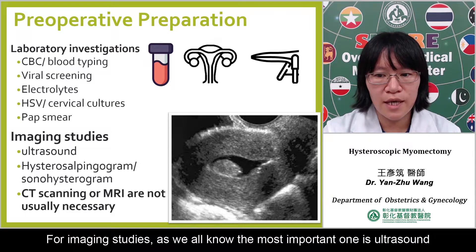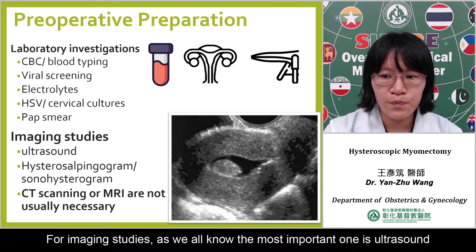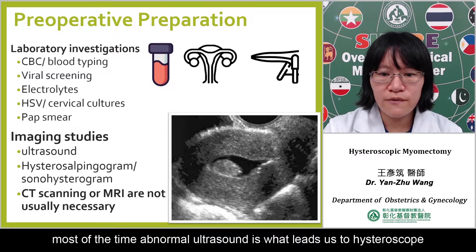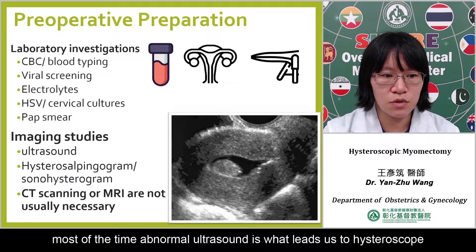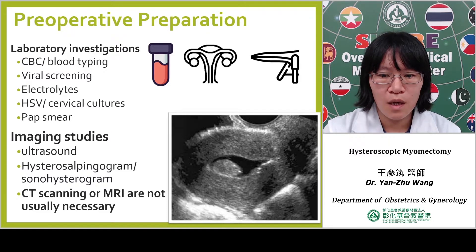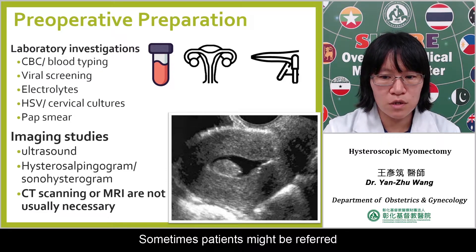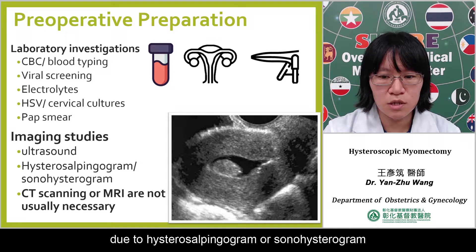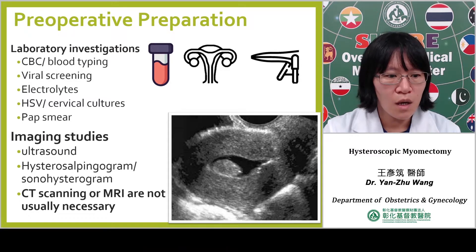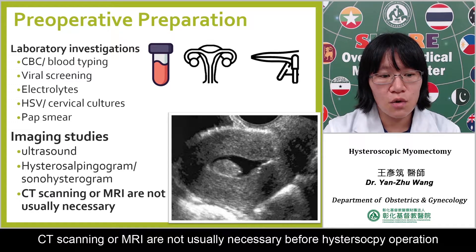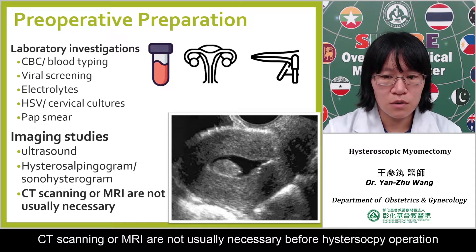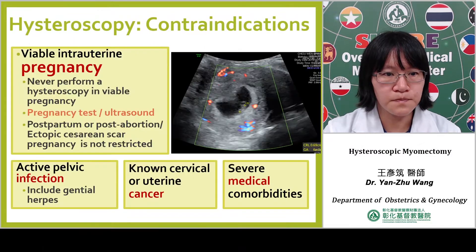For imaging studies, the most important thing is ultrasound. Most of the time, an abnormal ultrasound is what leads us to hysteroscopy. Sometimes patients might be referred due to a hysterosalpingogram or a sonohysterogram. CT scanning or MRI are not usually necessary for hysteroscopy.